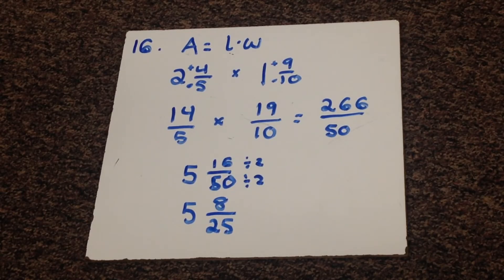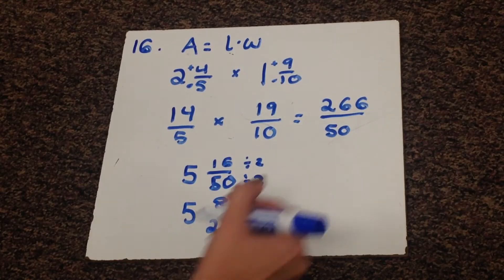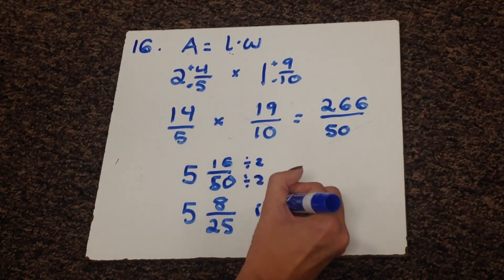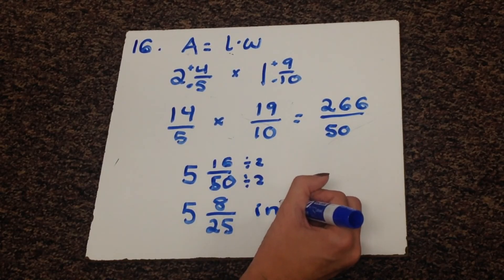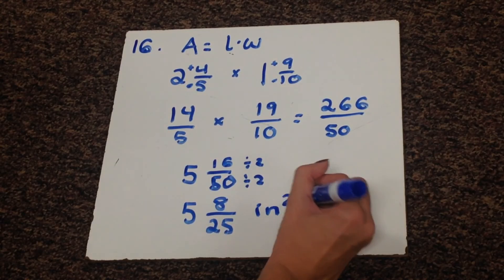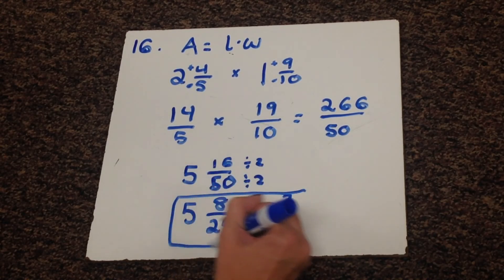And you also need to make sure you include units. This is a story problem. So we know that we're in inches. But because it is area, it's an inch times an inch, which is inches squared. So that would be your final answer.